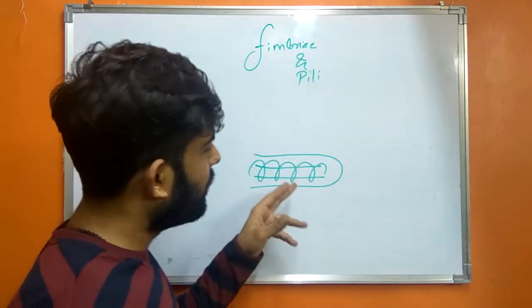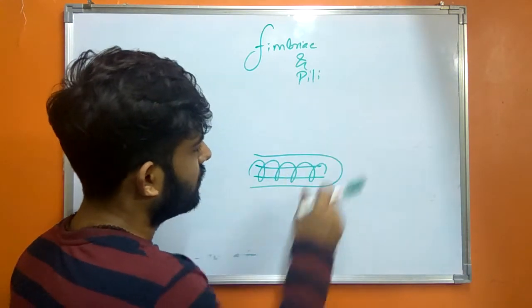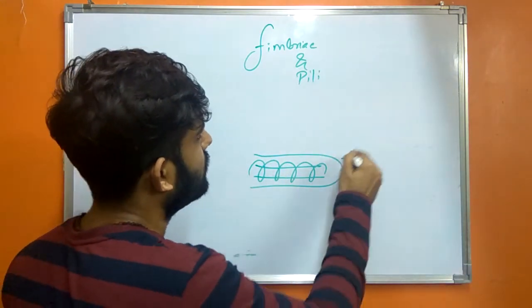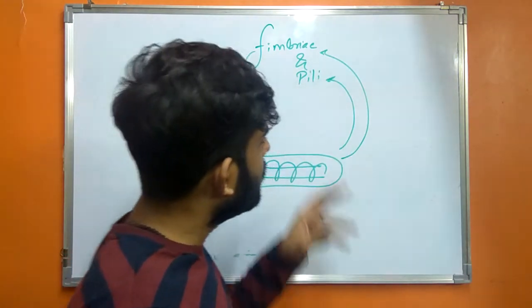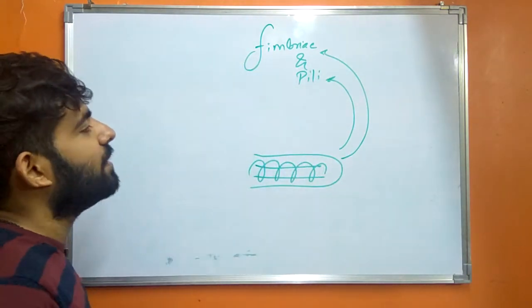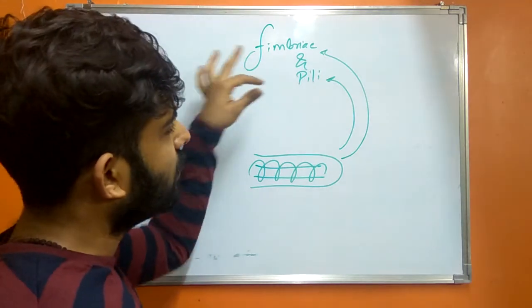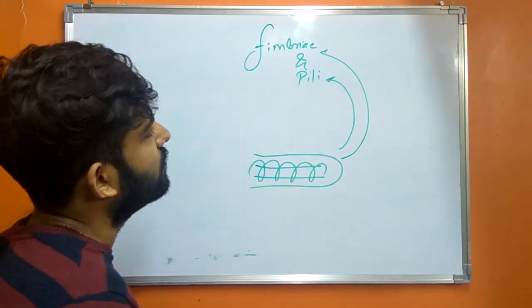So this structure can be further split into Fimbria or Pilli. Generally the terms Fimbria and Pilli are used interchangeably, but the functions of these two structures are totally different.